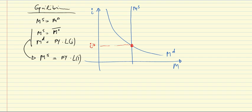Equilibrium in the money market determines the interest rate. Put differently, the interest rate clears the market for money. And since a money market in equilibrium implies a bond market in equilibrium, the interest rate clears the financial market. That's a very fundamental conclusion, and we shall keep it in mind.